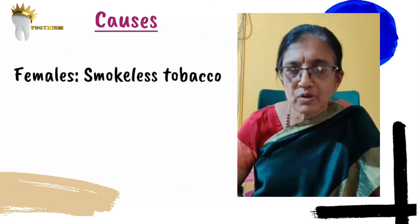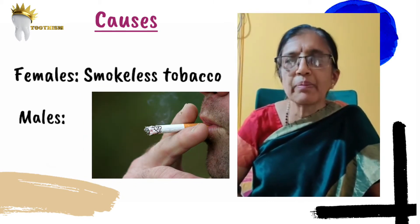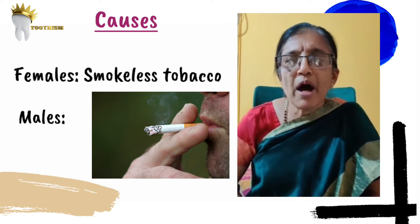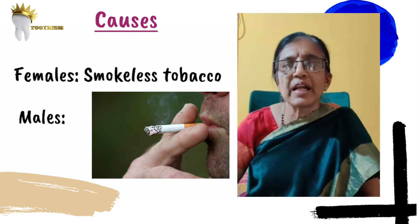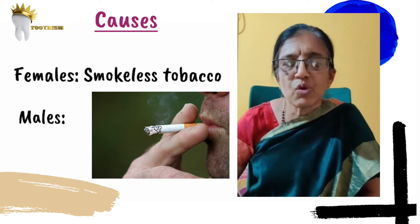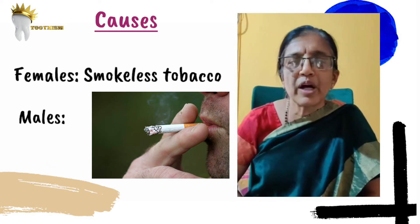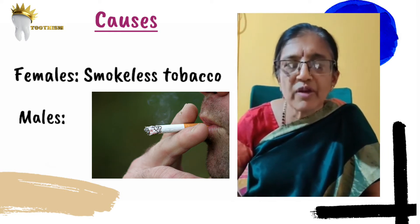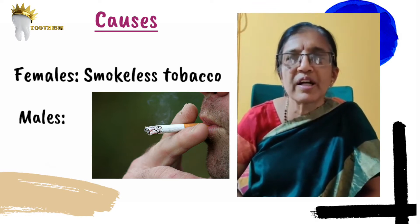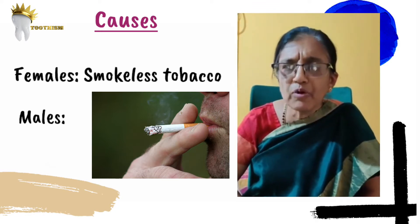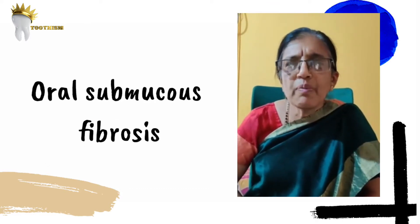In females, smokeless tobacco is used often, and in males, cigarettes, bidis, and paan masala are common. Nowadays paan masala is available everywhere; though they claim it contains no tobacco, it has a lot of tobacco content. Its use is very rampant among youth, causing a condition called submucous fibrosis, where the patient will not be able to open the mouth.